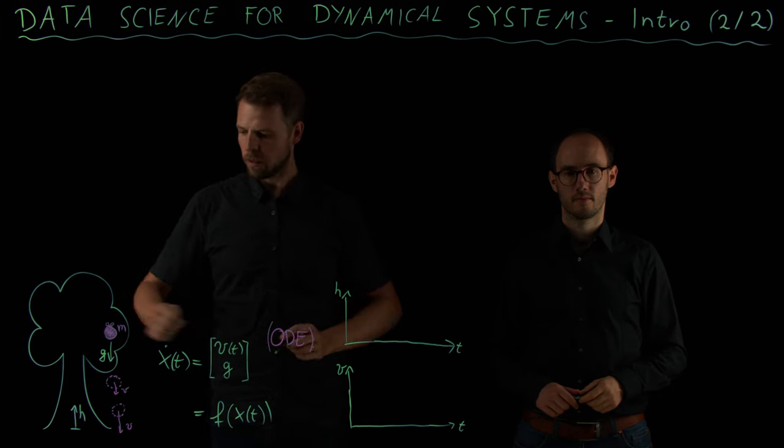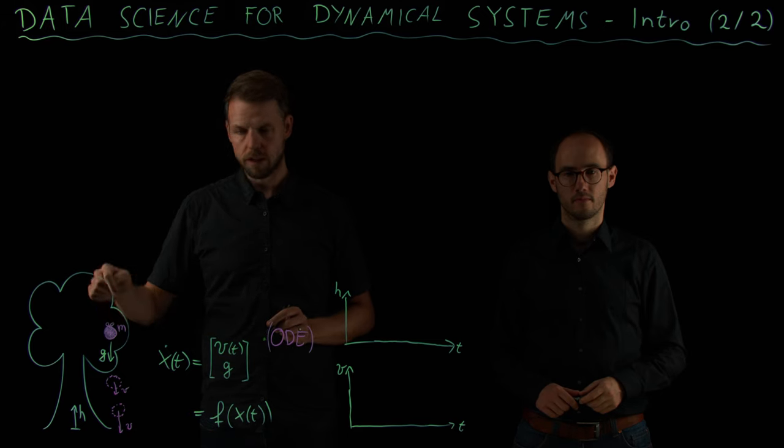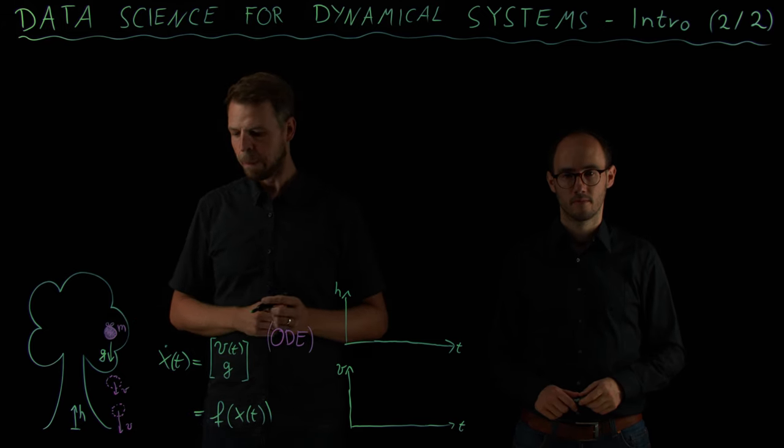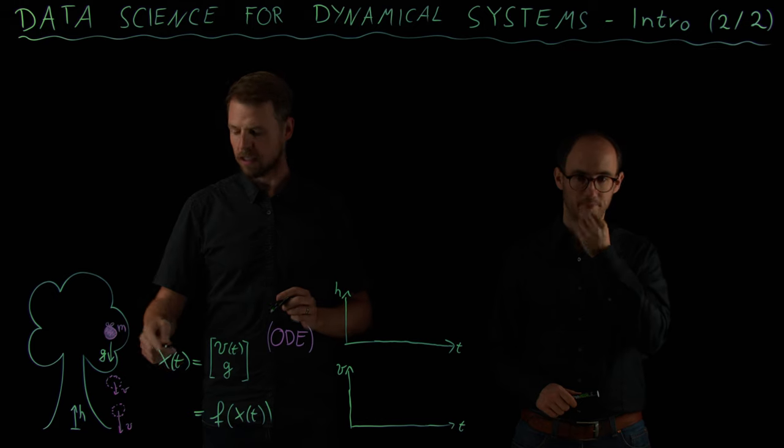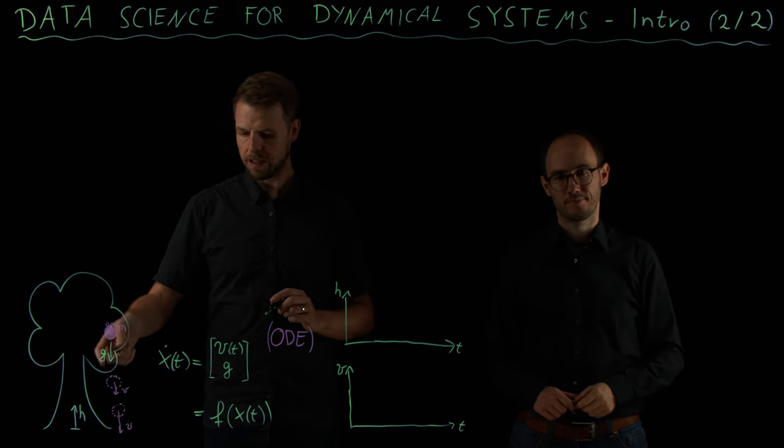We started out with this very simple model where we had this apple that starts to fall at some point in time, and its state x is composed of the height of the apple and its velocity.